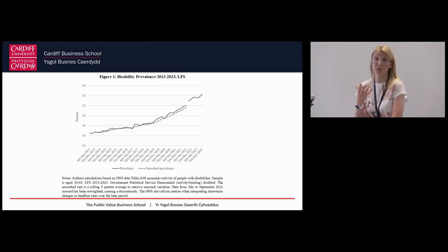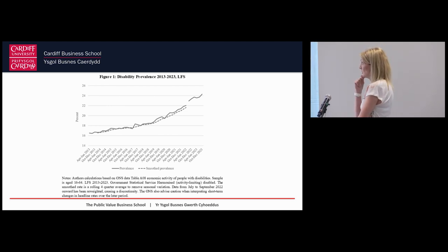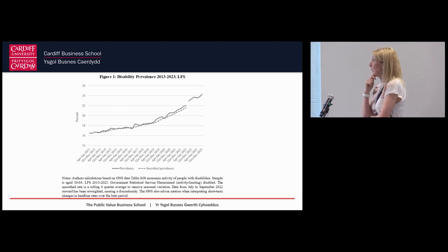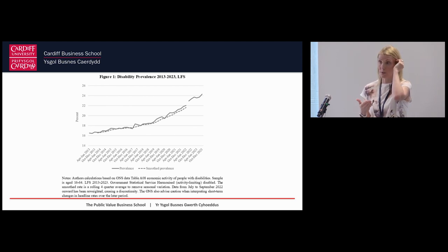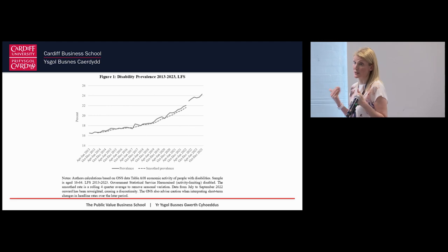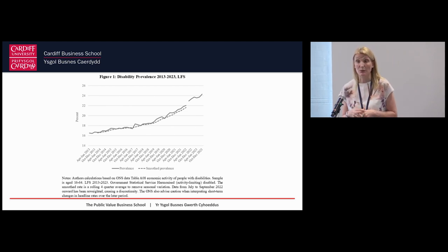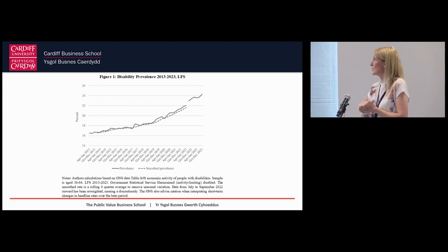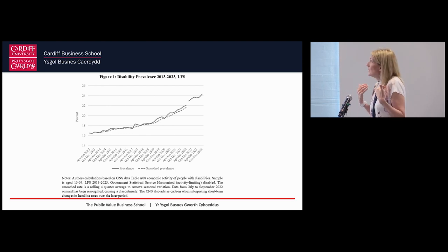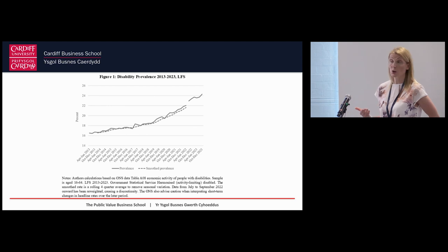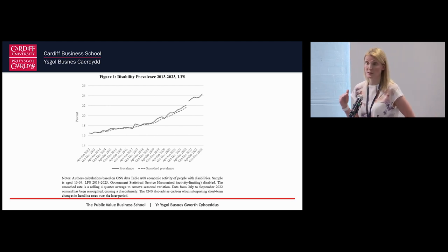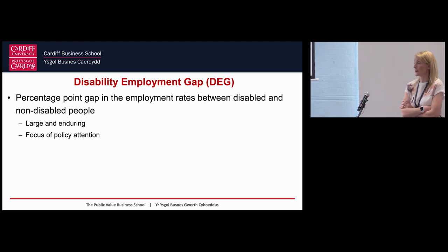This chart shows disability prevalence - the proportion of the working age population classified as having an activity limiting disability, plotted over time from 2013. The first thing that shocks people is the extent of prevalence: about 16% of the working age population in 2013. What you can see quite clearly is growth in disability prevalence over time. Importantly, that trend was evident before COVID-19. Looking at the most recent estimates, about a quarter of the population would now be classified as disabled.